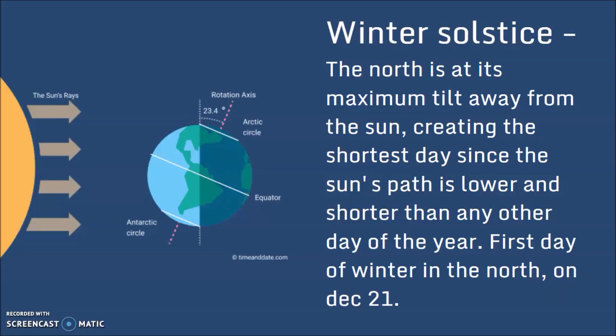The winter solstice is the opposite, where the North is at its maximum tilt away from the Sun, and this creates the shortest day, since the Sun's path across our sky is the lowest, and shortest than any other day of the year.